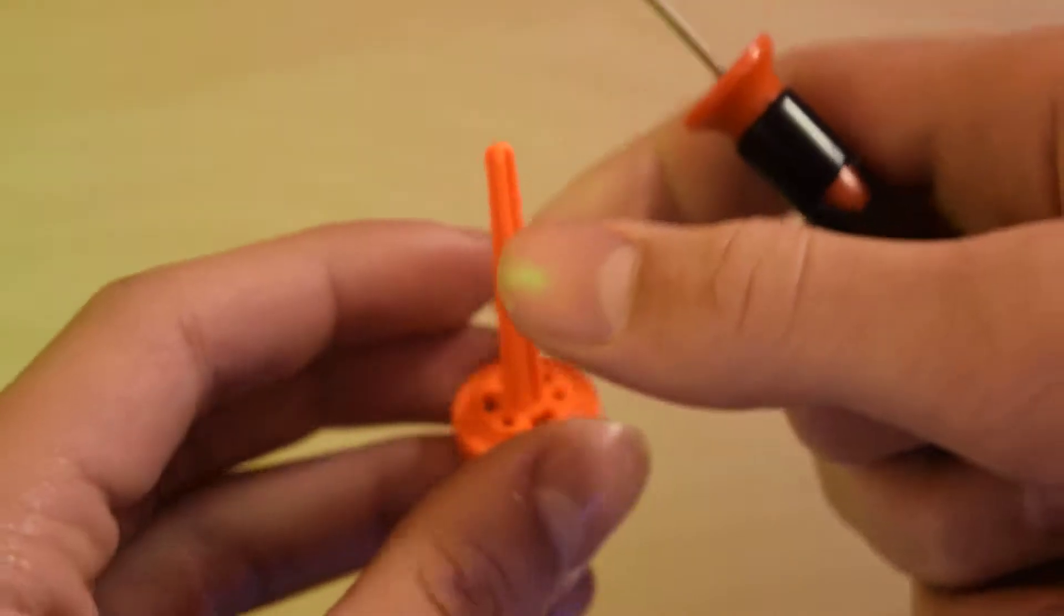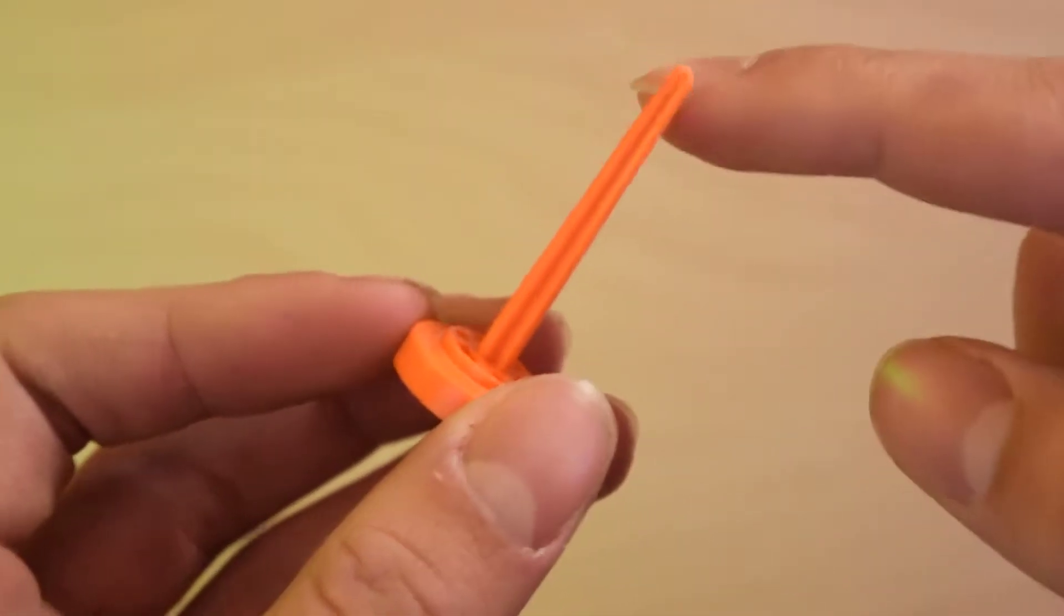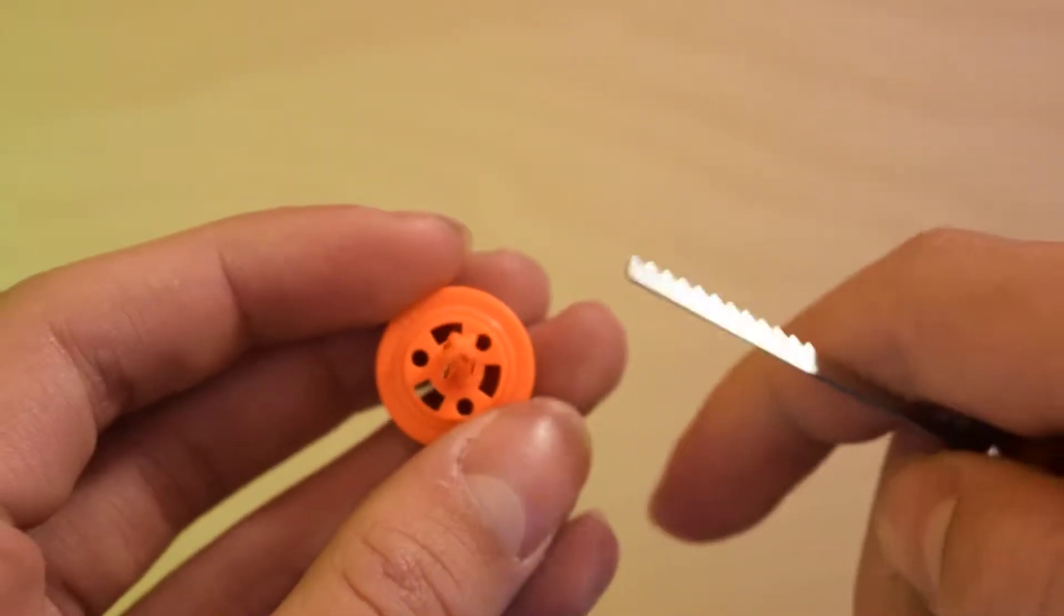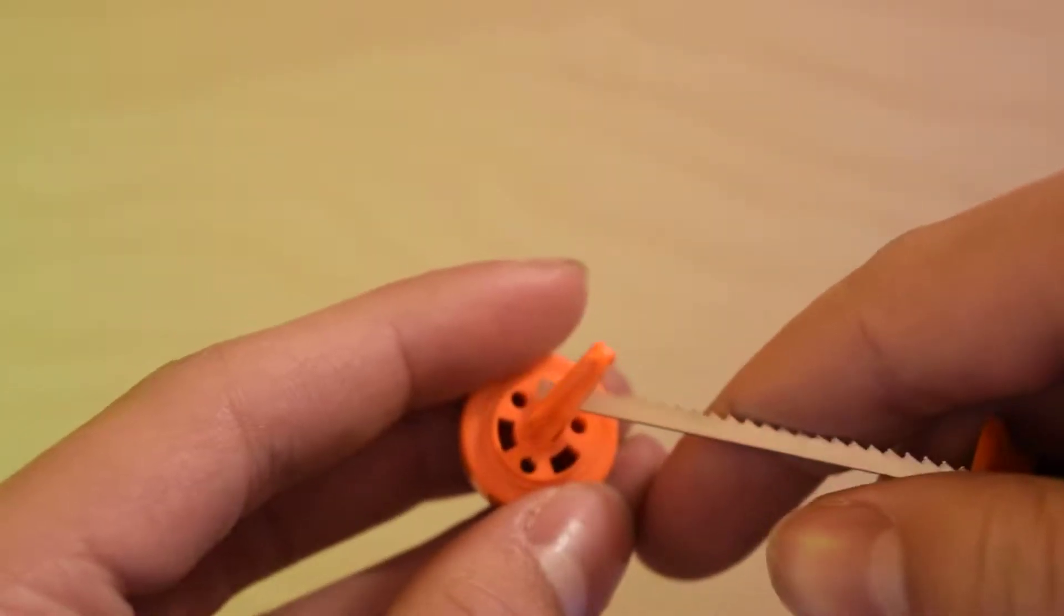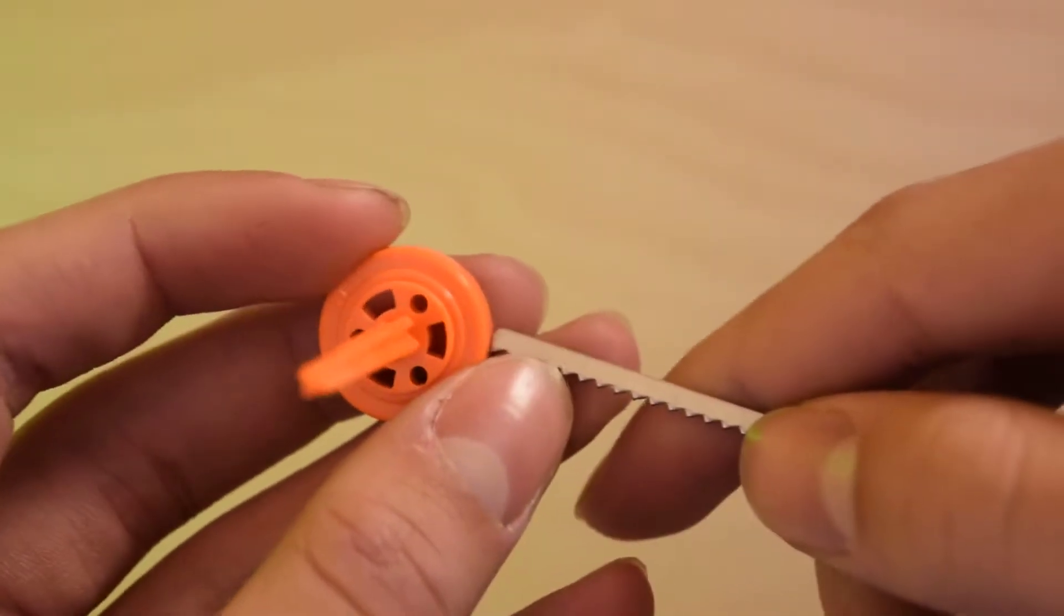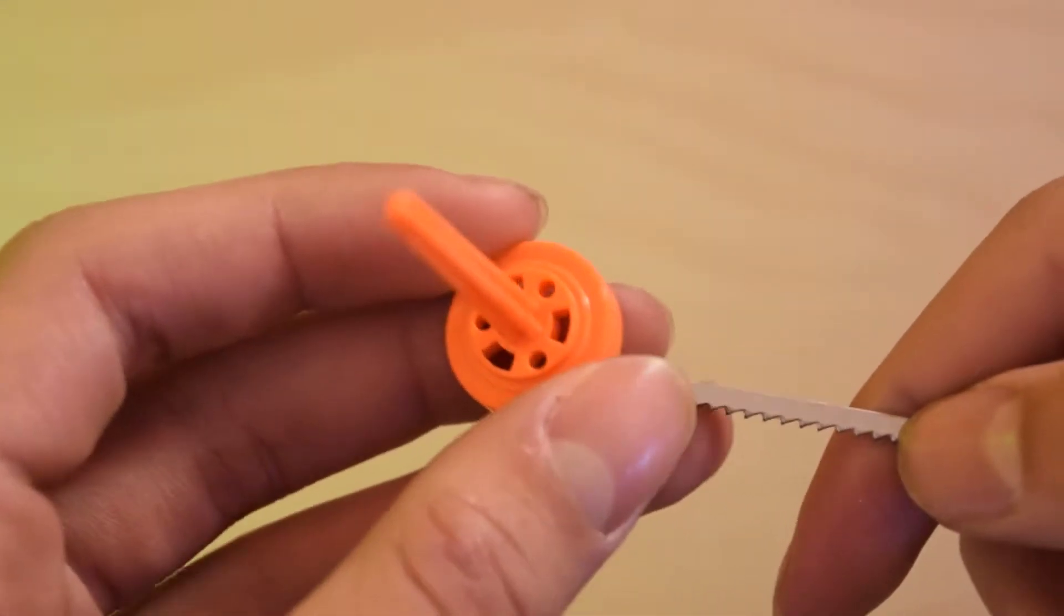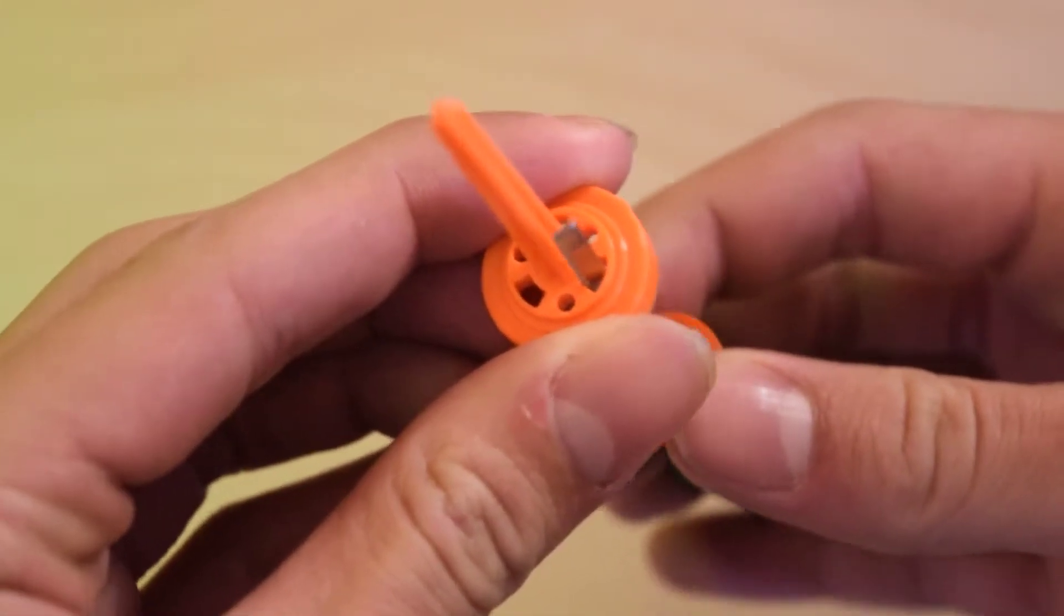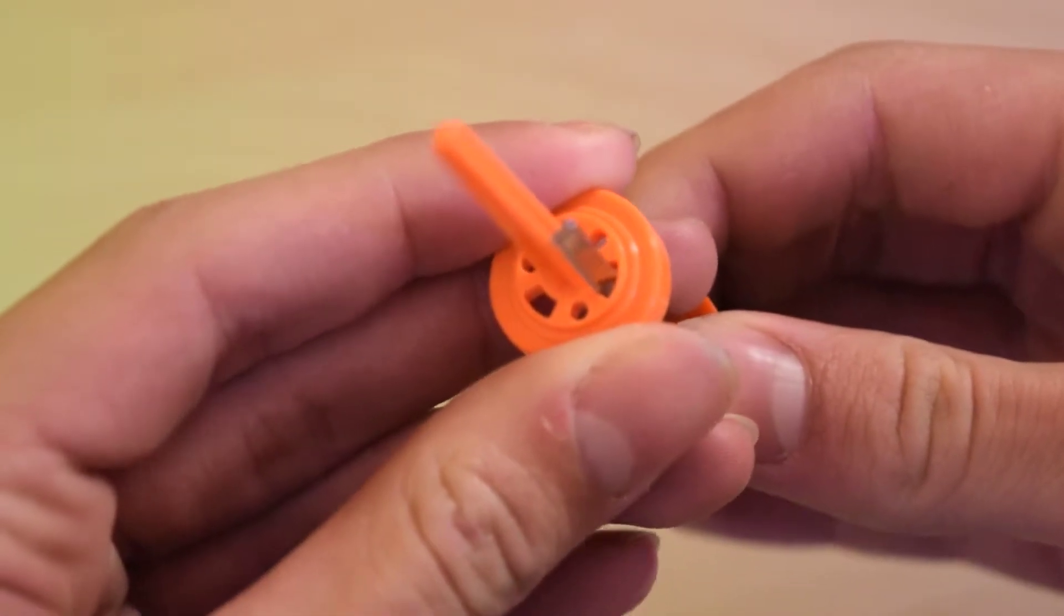To remove the dart post, there are pretty much two ways you can do it. One is you can simply clip off the dart post with like some wire snippers or something. But what I like to do is actually saw out the area around the dart post so that it opens up even more of the airflow. So through one of these larger gaps, because there are three circular holes and then three kind of rectangular-ish holes, you put your saw through one of the rectangular ones and you just start sawing back and forth.